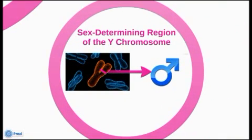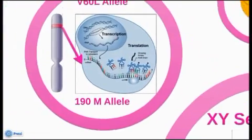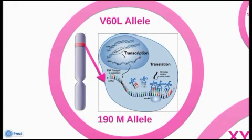XY sex reversal occurs because of defects in nucleocytoplasmic transportation of SRY, caused by the V60L allele and the I90M allele. SRY is the sex-determining region of the Y chromosome that initiates human testes formation. The V60L allele and I90M allele are part of a group of chromosomal proteins involved in the regulation of DNA-dependent processes like transcription and translation.